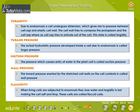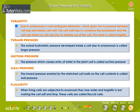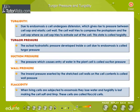Turgor Pressure and Turgidity: Due to endosmosis, a cell undergoes distension, which gives rise to pressure between the cell sap and the elastic cell wall. The cell wall tries to compress the protoplasm and the cell sap, whereas the cell sap tries to extrude out of the cell. This state is called turgidity. Turgor Pressure is the actual hydrostatic pressure developed inside a cell due to endosmosis.